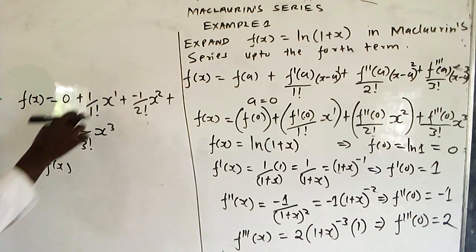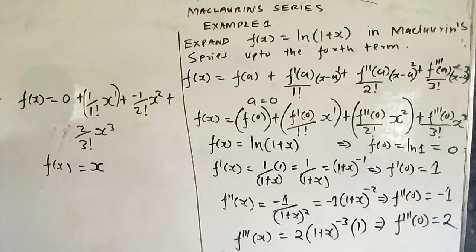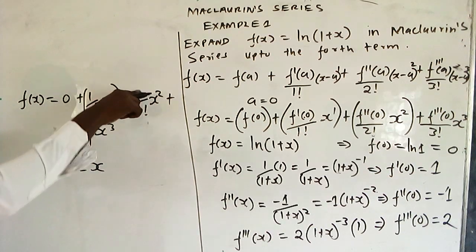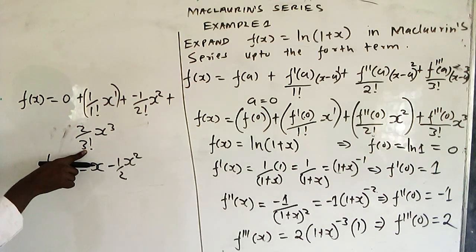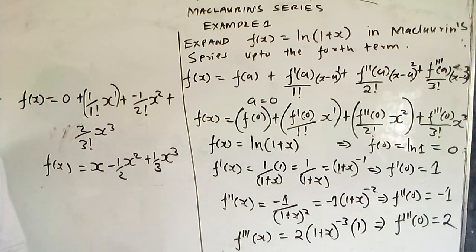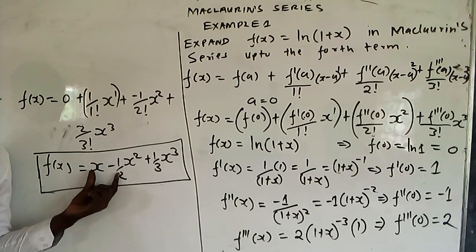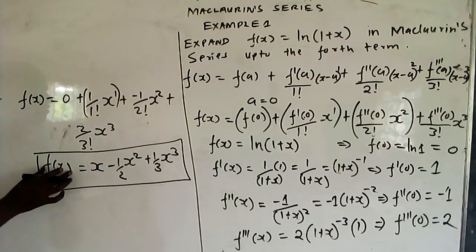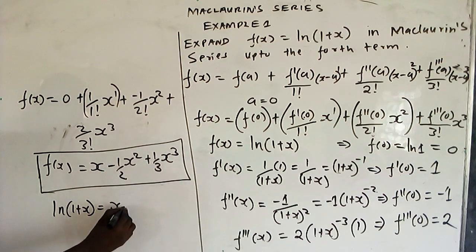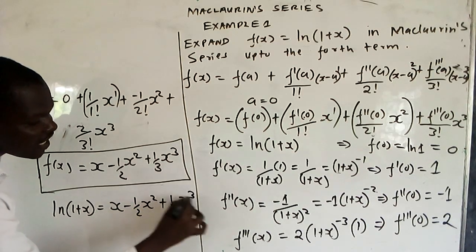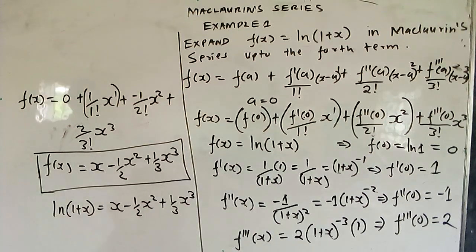Simplifying: the 0 term goes away. 1 over 1 factorial is 1, so x raised to power 1 is just x. Then negative 1 over 2 factorial: 2 factorial is 2, so that's negative one-half, giving negative one-half x squared. Then 2 over 3 factorial: 3 factorial is 6, so 2 over 6 is one-third, giving plus one-third x cubed. So the expansion of ln(1 + x) in the Maclaurin series up to the fourth term is x minus one-half x squared plus one-third x cubed.